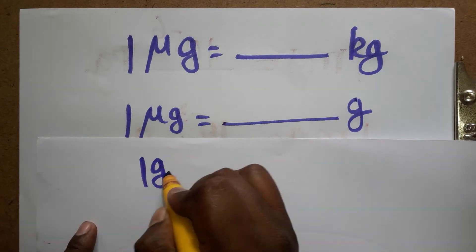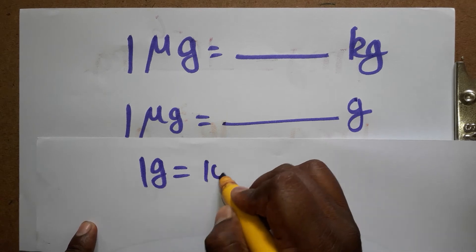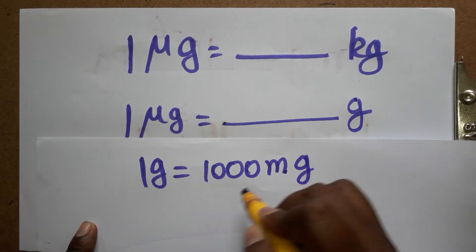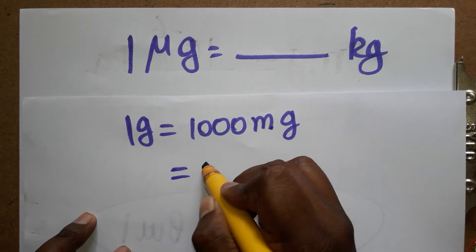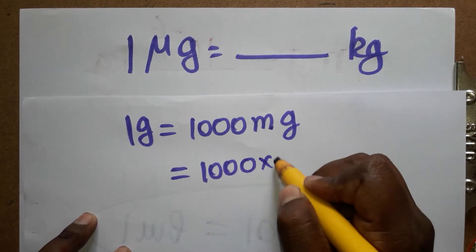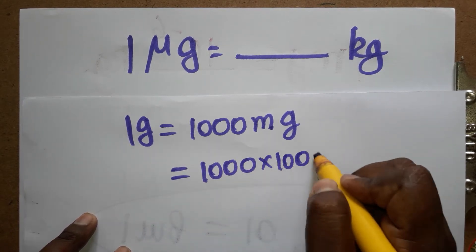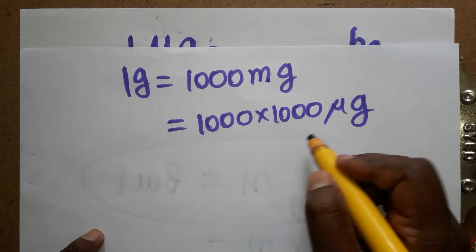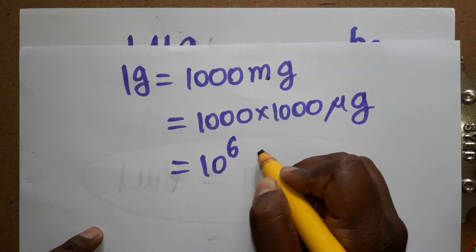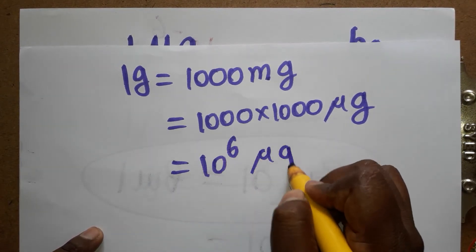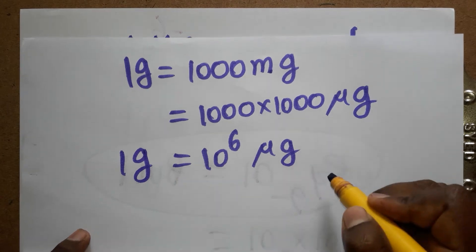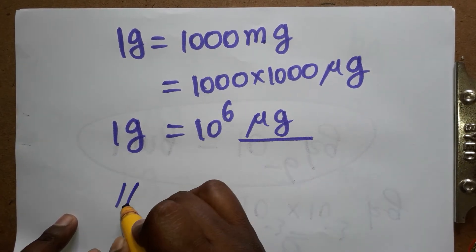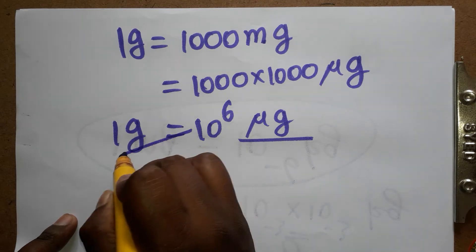One gram is equal to one thousand milligrams. One milligram is one thousand micrograms. So one gram equals one thousand times one thousand micrograms, which is ten to the power six micrograms. Therefore, one gram is equal to 10⁶ micrograms.